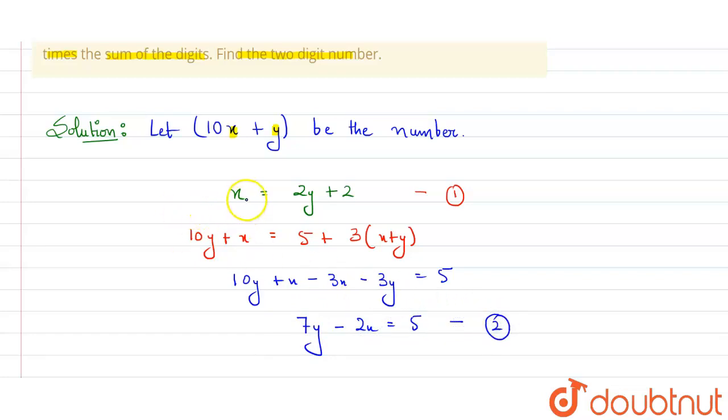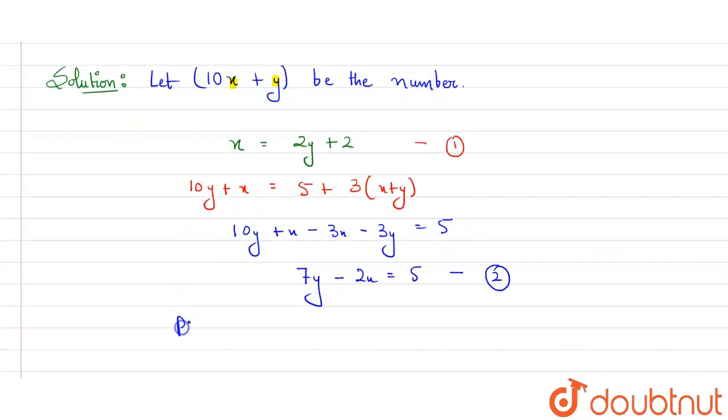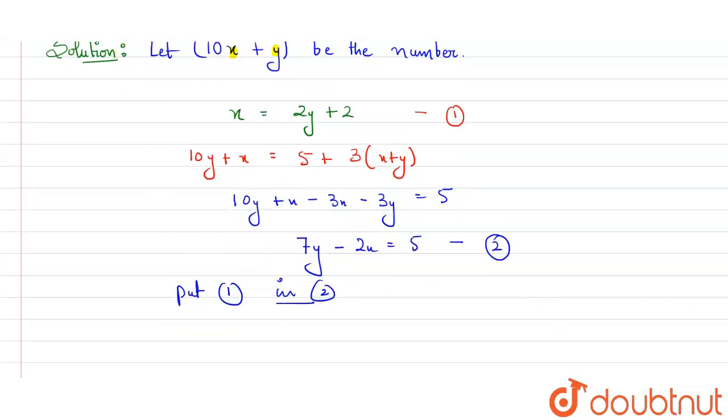Now look, we are having the value of x is equal to 2y + 2. So we will put the first equation in second. We will use the value of x here. If I'll substitute the value of x here, it will be 7y - 2(2y + 2) = 5.